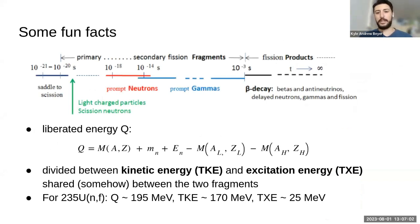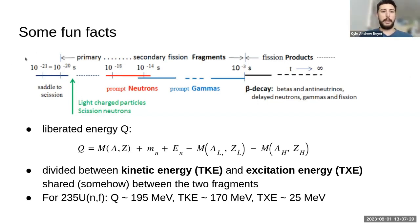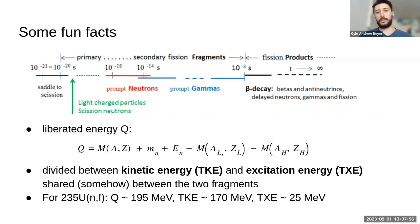So first I'm going to start off with some fun facts — essentially just a couple things we observe in fission. First, long disparate timescales: the process from the deformed, elongated nucleus breaking into two pieces happens on the order of 10 to the minus 21 seconds. Then prompt neutrons and gammas are boiled off from 10 to the minus 18 to 10 to the minus 3 seconds. The fragments that remain are unstable against beta decay, and that can cause beta particles, delayed neutrons, and gammas many years after the initial fission occurred.